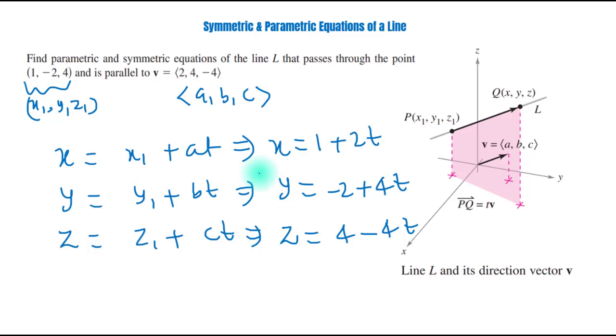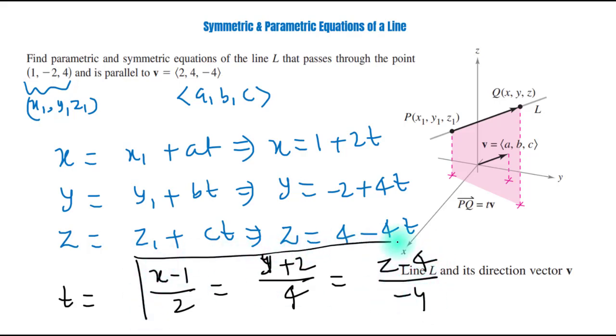Now, we will convert this equation into symmetric form. Simply, we will calculate t in each case. So, t equals (x - 1)/2 equals (y + 2)/4 equals (z - 4)/(-4). So, this is called symmetric form of equation of a line.